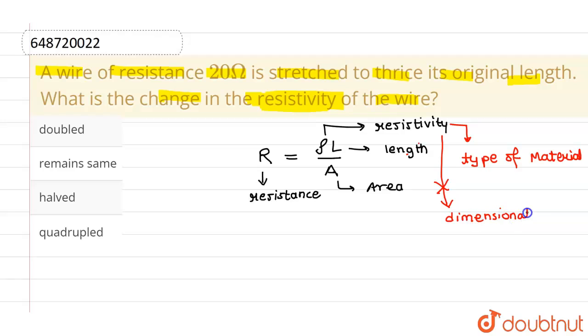So even if you stretch the wire to thrice its length, there will be no change in the resistivity. The correct option is option 2, which remains same, and all other options are incorrect. I hope you understood. Thank you.